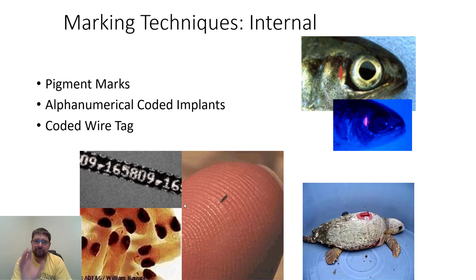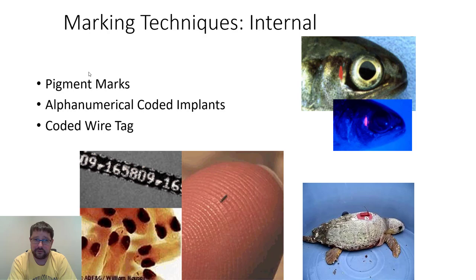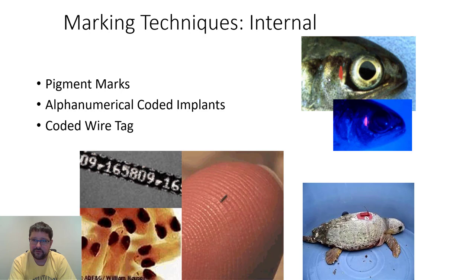Now let's talk about internal techniques. Pigment marks — similar to dyeing or painting — but like the elastomer tag mentioned earlier, you can use a paint that reflects a certain color under UV light. You insert it into a region, run a UV light over it, and it glows even much later in life. With enough different colors you can do different color patterns and individualize these tagging techniques.